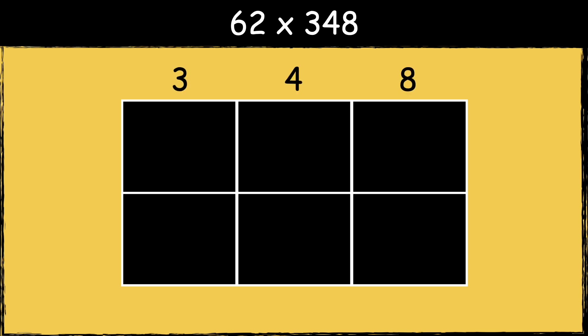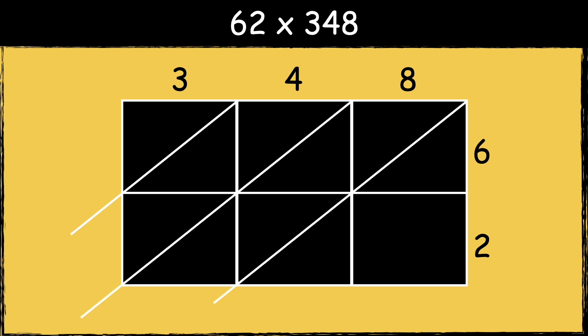Here is the next example: 62 multiplied by 348. First we draw the grid. We put 348 along the top and 62 down the side. Next draw your diagonal lines going through the boxes.